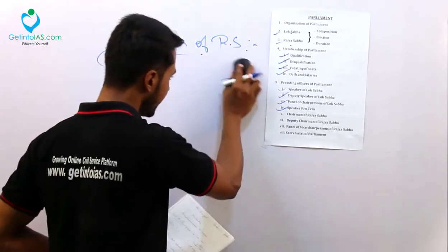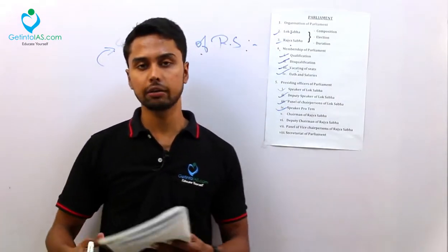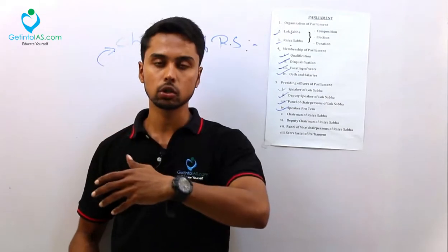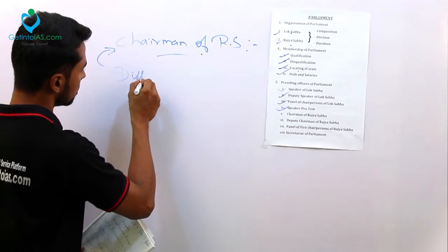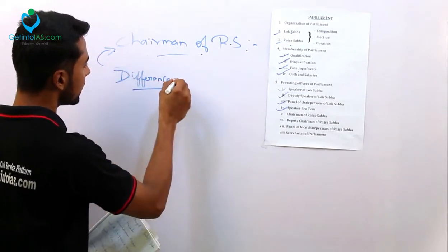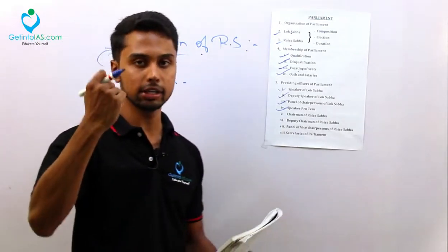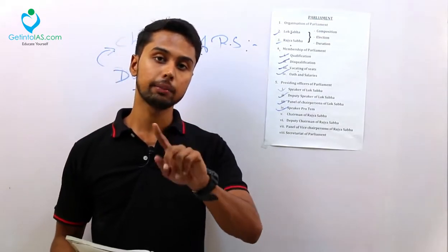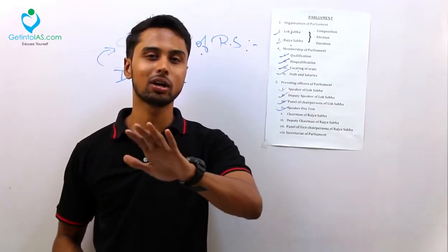The functions and powers of the Chairman of Rajya Sabha are the same as the Speaker. Now we will see the differences. The first variation is: the Speaker decides whether a bill is a money bill or not — that power belongs to the Speaker of Lok Sabha only. The Chairman of Rajya Sabha does not have that power.